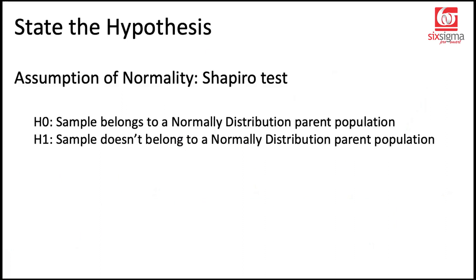Talking about the assumption of normality, we have multiple tests but we'll be talking about a particular test today which is known as the Shapiro test. We may not want to get too much into the math behind it because that will be a little out of scope but we should at least understand what does it try to do. So in Shapiro test, the null hypothesis is that the sample belongs to a normally distributed parent population and the alternative hypothesis is that the sample doesn't belong to a normally distributed parent population.